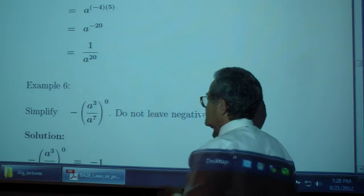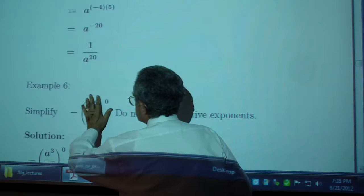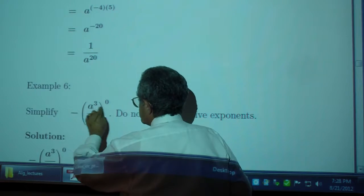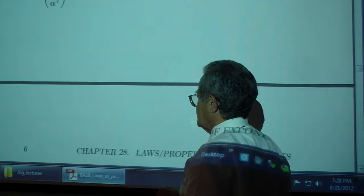Example 6. Quantity to the power 0 is 1. This is 1, but we want the opposite of that, so negative 1.